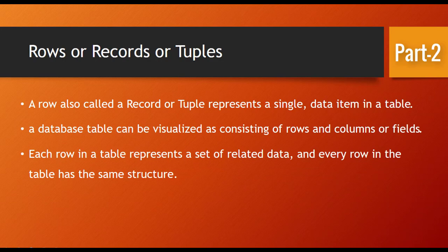The rows, record, and tuples - these three terms are the same. A row, also called a record or tuple, represents a single data item in a table. Each row in a table represents a set of related data, and every row in the table has the same structure.